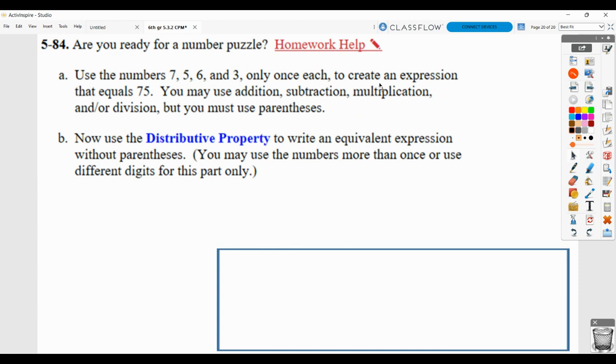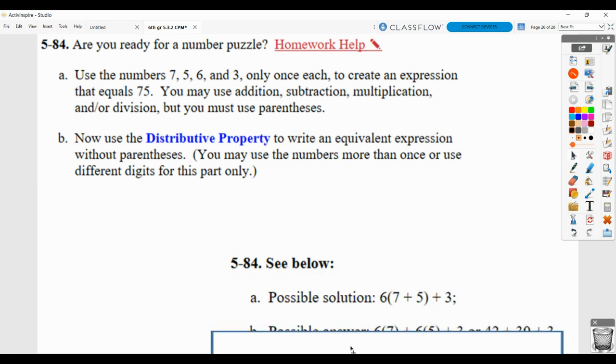Here, you had to come up with a combination of these to equal 75. Now, this is one that they say will work, but it's not the only one. So 6 times, in parentheses, 7 plus 5 plus 3. Because, remember, a number in front of parentheses, no operation in between, means multiply. So it's like a raise dot there. And 7 plus 5 is 12. 12 times 6 would be 72. And 72 plus 3 would be 75. So that's why that works.